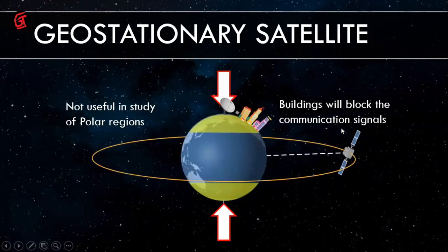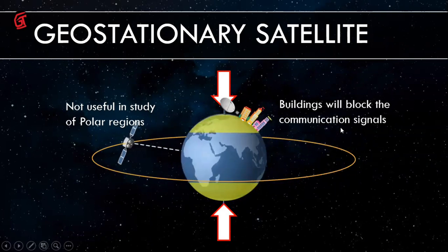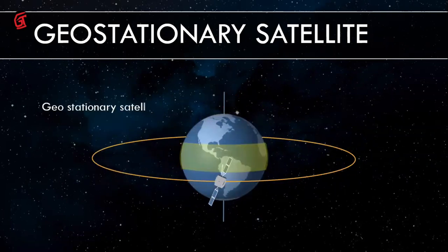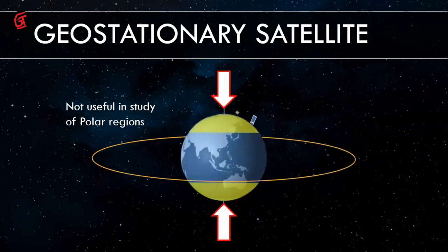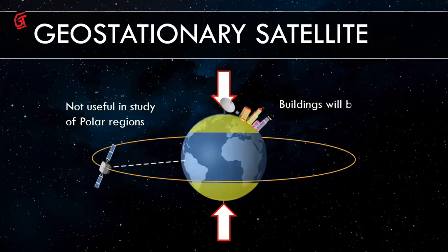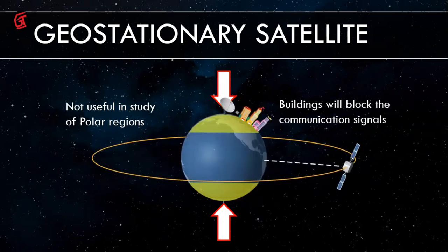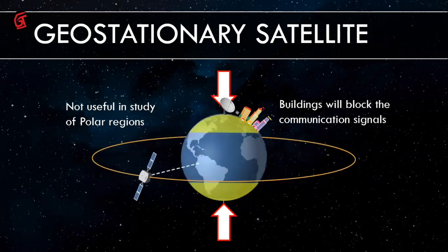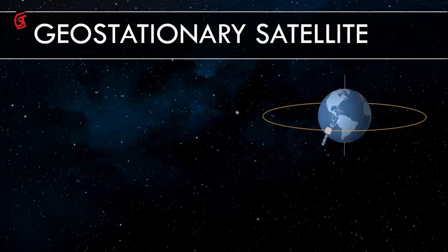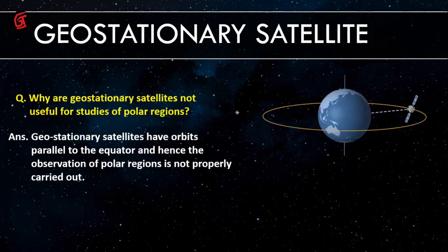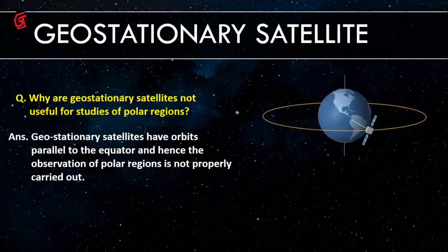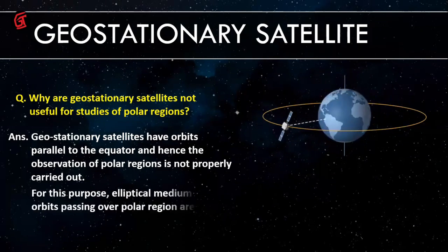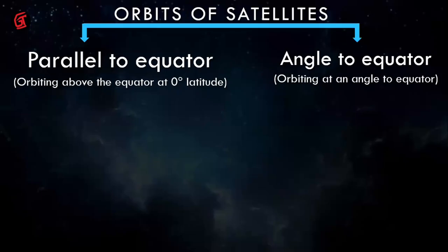Geostationary satellites have limitations. To study polar regions where the temperature is very low, you cannot use geostationary satellites. Also, dish antennas must be placed outside the house because walls block communication signals. Geostationary satellites are parallel to the equator, but polar regions are at the north and south, so good coverage of those regions is not possible.